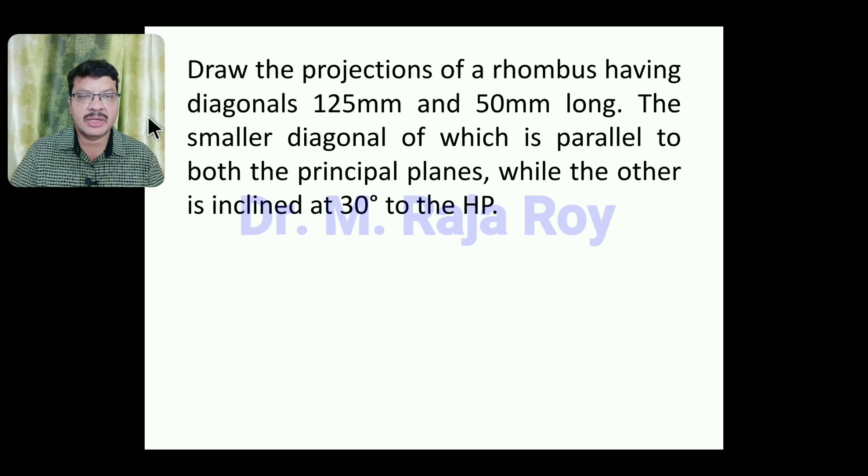Draw the projections of a rhombus having diagonals 125mm and 50mm long, the smaller diagonal of which is parallel to both the principal planes while the other is inclined at 30 degrees to the HP.